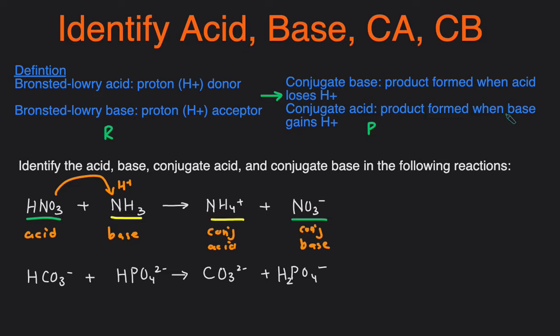And then conjugate acid is the product that's formed when the base gains an H+. So NH3, when it picks up an H+, it becomes NH4+, and that's why it's the conjugate acid. Okay, let's take a look at the next example.